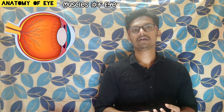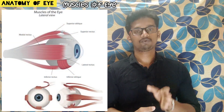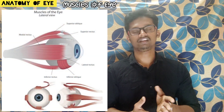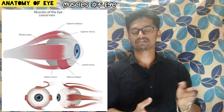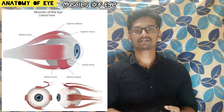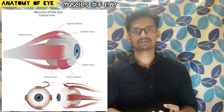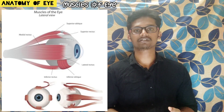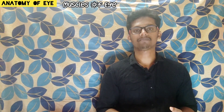There are six muscles present in our eye to control the movement of the eyeball. Four muscles are responsible for superior, inferior, and lateral side movements of the eye, while two oblique muscles are present for oblique rotation. So totally there are six muscles present for the movement of the eye.